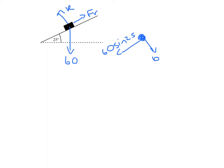Acting down the slope, and 60 cos 25 acting into the plane, the reaction and the friction.